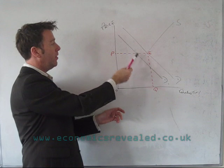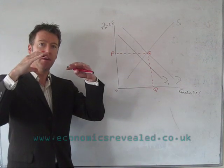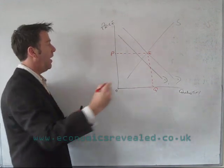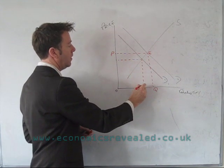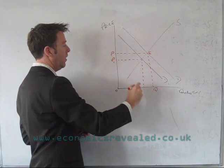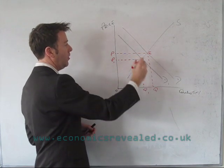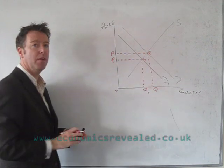And so what will tend to happen is the price will be pulled downwards and you will end up at a new equilibrium point, P1 and Q1 and we'll call that E1.